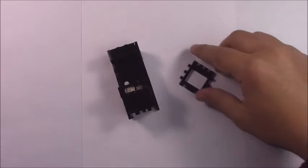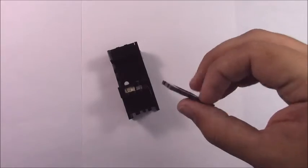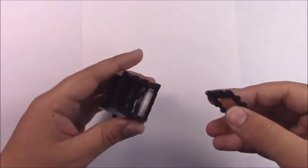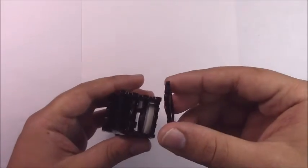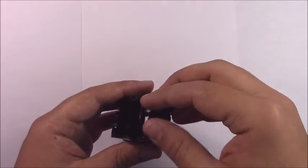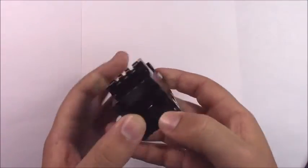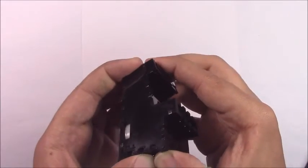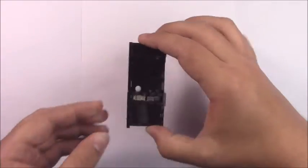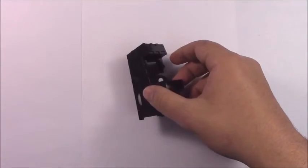Step fourteen. We're just going to take part number three, and we're going to insert it into the bottom of the arcade. Line up the holes with the thin side pointing inside of the arcade. And just snap it into place. That's step fourteen.